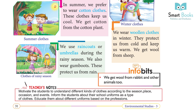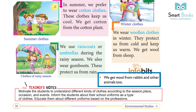We wear woolen clothes in winter. They protect us from cold and keep us warm. We get wool from sheep. We use raincoats or umbrellas during the rainy season. We also wear gum boots. These protect us from rain. We can also get wool from rabbits and other animals.